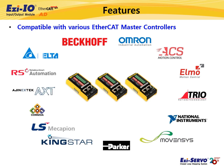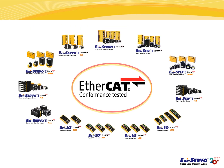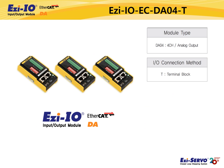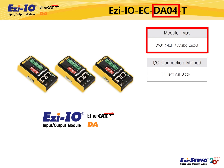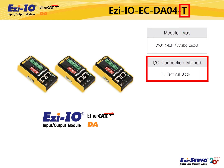I've introduced Easy IO EtherCAT-AD. Next, I'd like to introduce Easy IO EtherCAT-DA, an analog output module using the EtherCAT network. In the example model name, IO means input and output module, and EC means the product uses the EtherCAT network. DA04 means the product supports four analog output channels, and T means that a terminal block is applied.